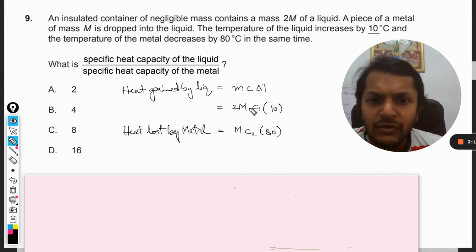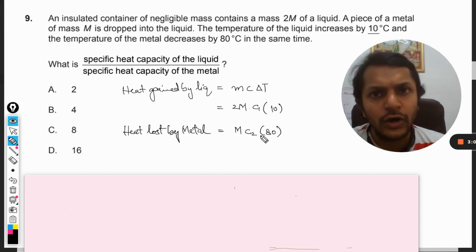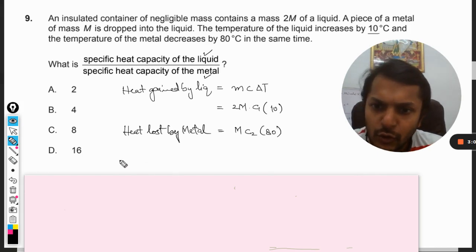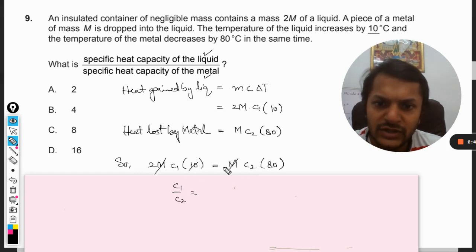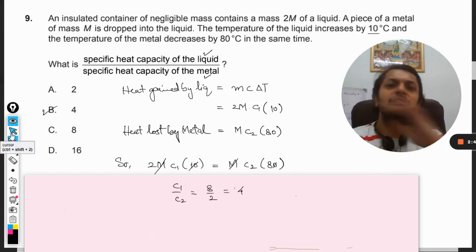Now we will equate them and we will find the ratio of C1 by C2, because we want the specific heat capacity of liquid to metal. So 2 into M C1 into 10 is equal to M C2 into 80. M and M cancel out, so C1 by C2 will be equal to 8 divided by 2, that is 4. So our answer is B.